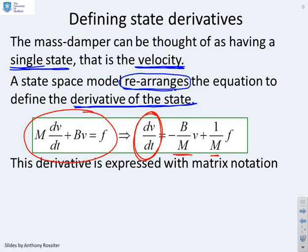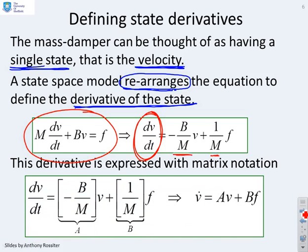The derivative can now be expressed with matrix notation. I've written dV/dt is some matrix A times the velocity plus some matrix B times the input, which here is the force. A is minus B over M. Capital B is 1 over M. Here is my generic state space equation. V dot, the derivative of the state, is given by AV plus BF. You should note that those two B's are not the same.